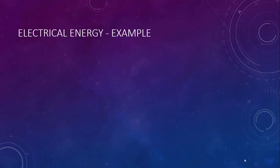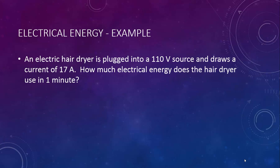Let's take a look at an example. An electric hair dryer is plugged into a 110 volt source and draws a current of 17 amps. How much electrical energy does the hair dryer use in one minute? If we made a list of givens, we would see that we know the voltage, the current, and the time.